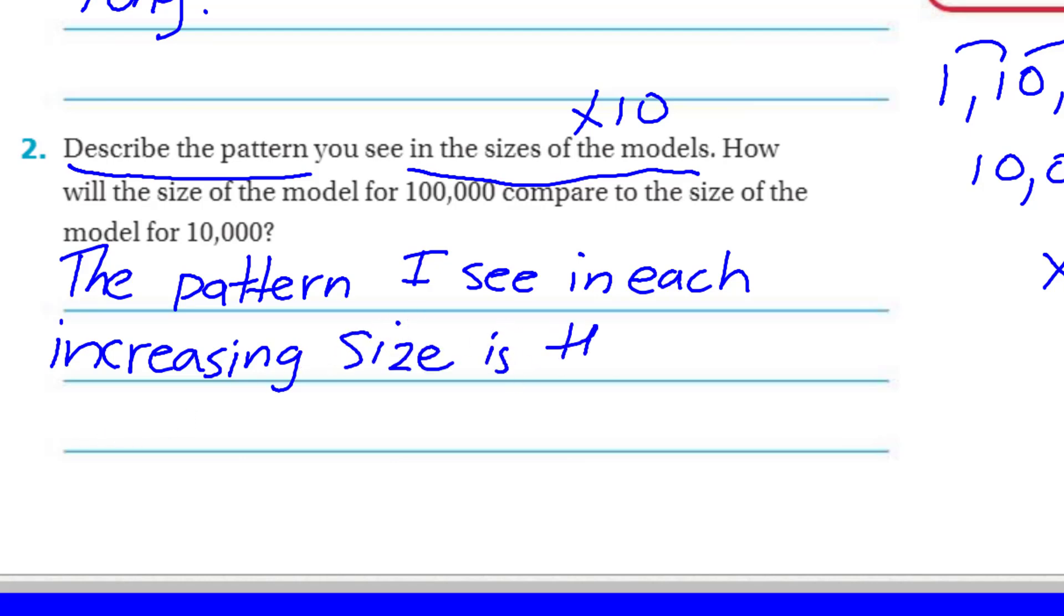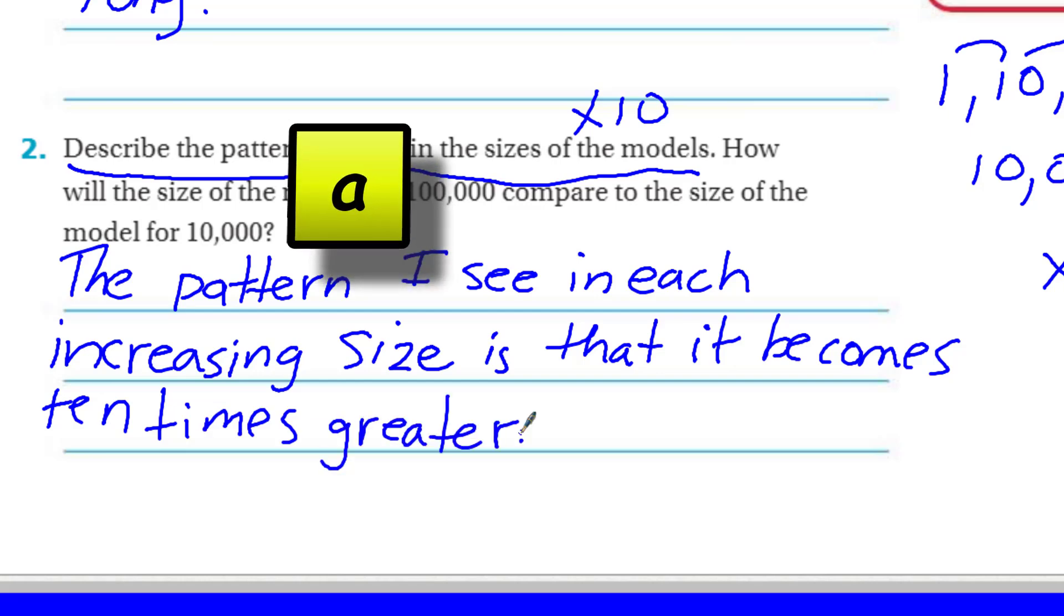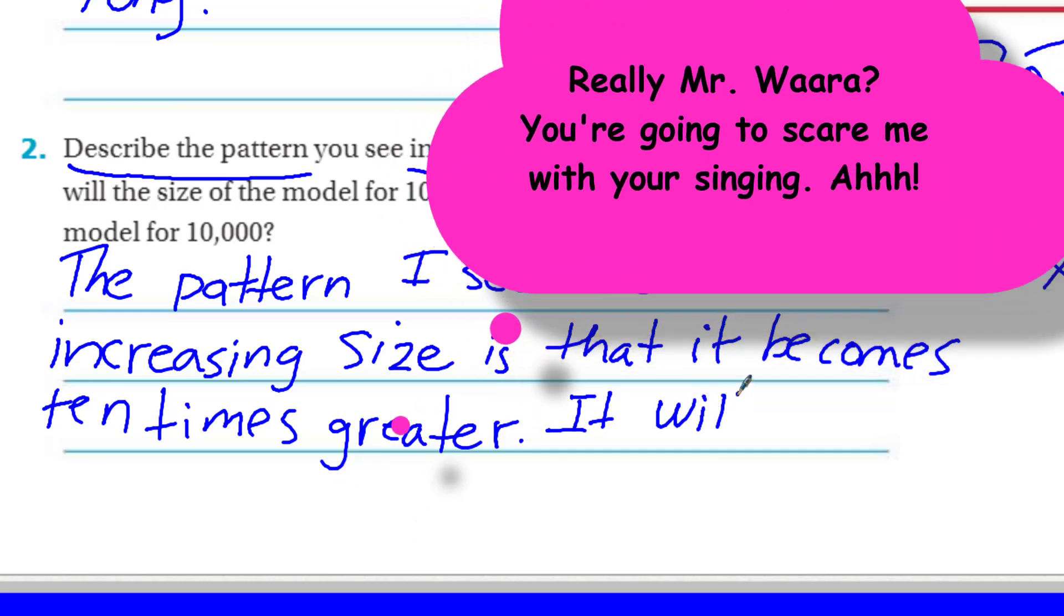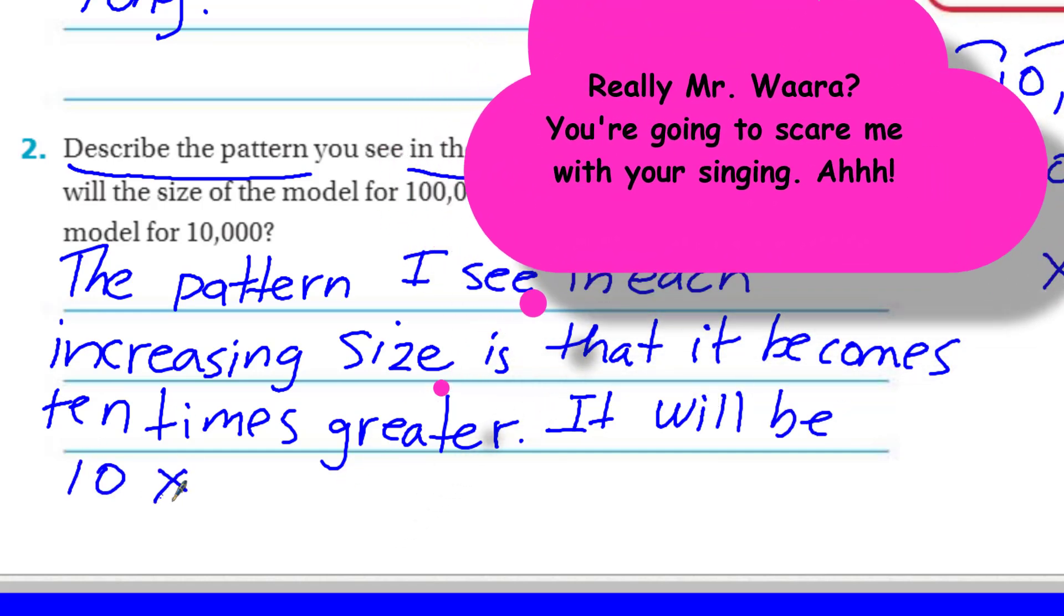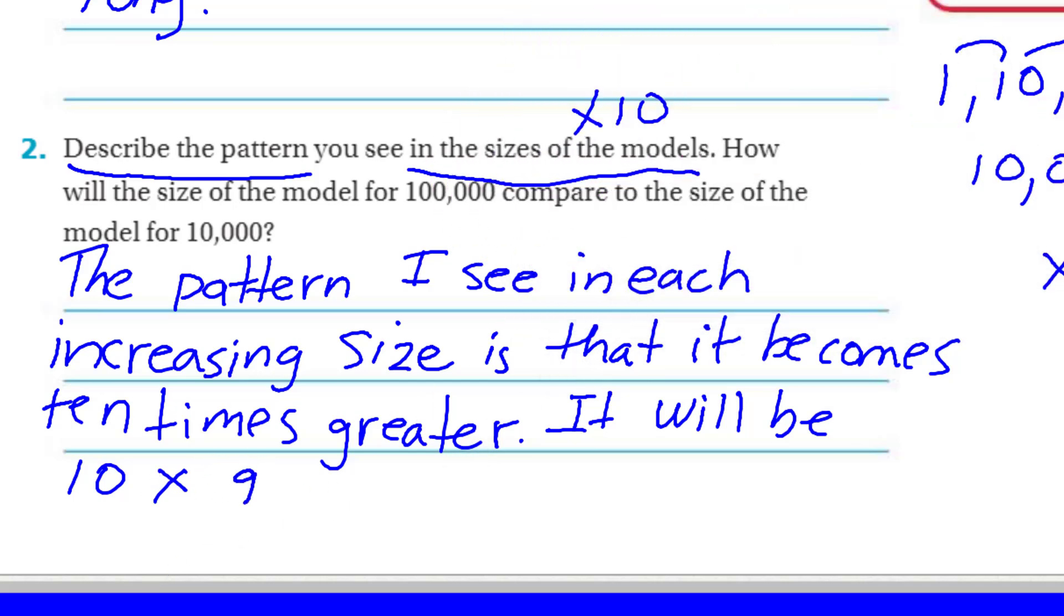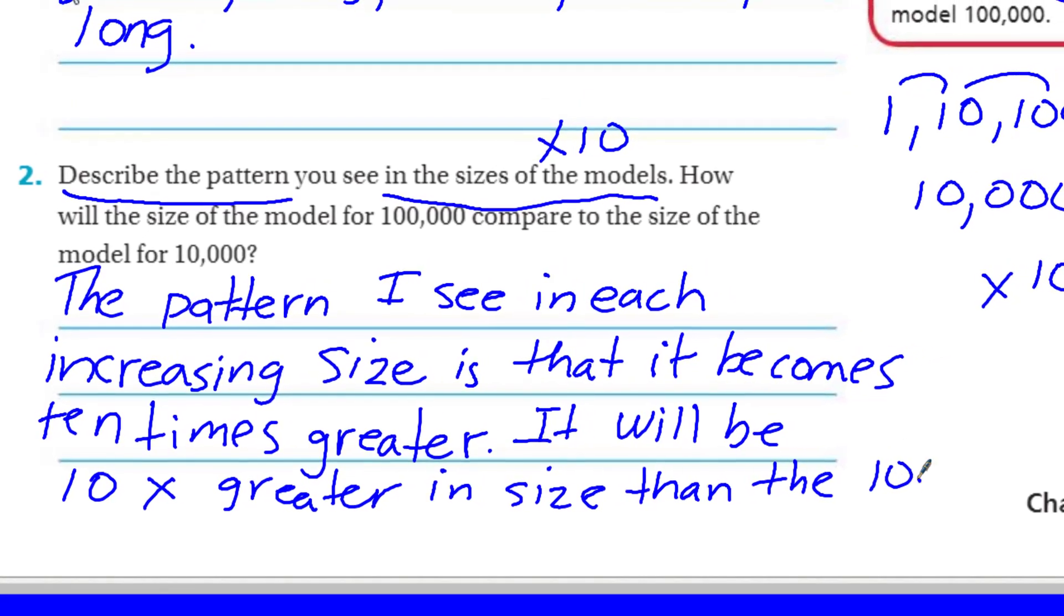Describe the pattern you see in the sizes of the models. How will the size of the model for 100,000 compare to the size of the model for 10,000? The pattern I see in each increasing size is that it becomes ten times greater. It will be ten times greater in size than the 10,000, and I'm referring to the 100,000.